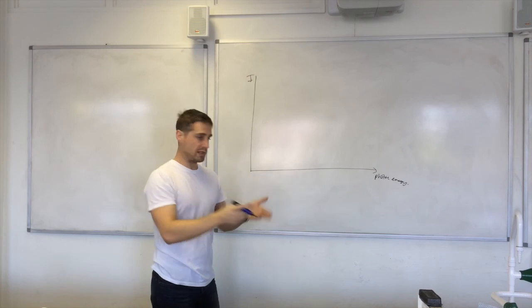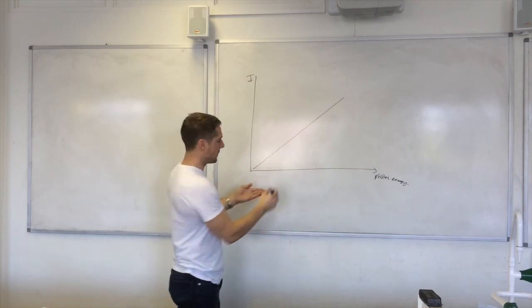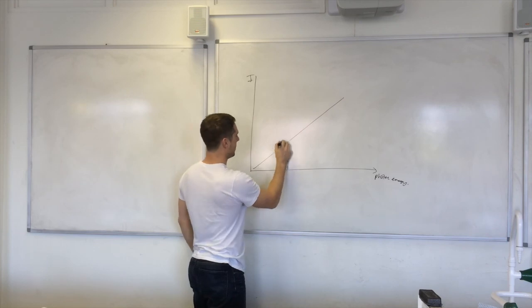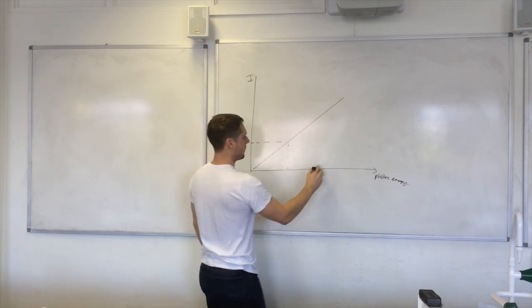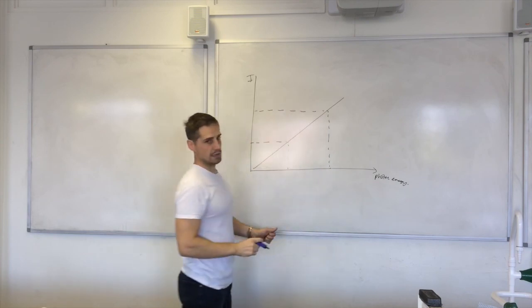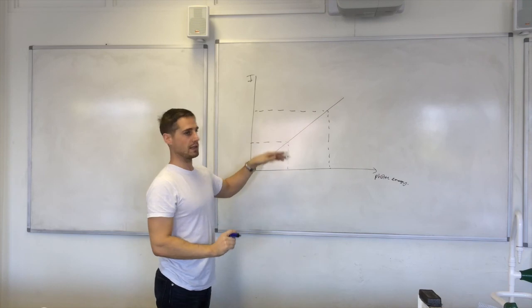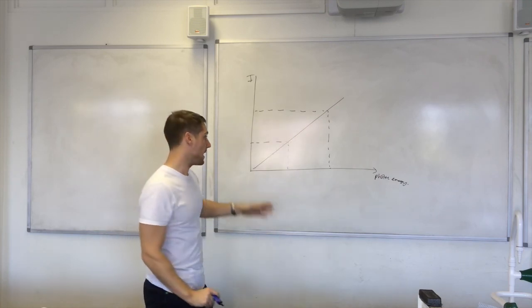So basically if you plotted a straight line here, then for this photon energy we get this much energy. For this photon energy we get more intensity. So photon energy, intensity. Photon energy, intensity.